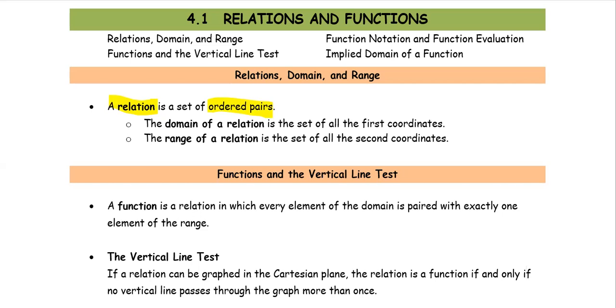The ordered pairs are in the form of two items. The first one is called the first coordinate, usually using the notation x. The second one is called the second coordinate, usually we use the notation y. Both are separated by the comma sign.